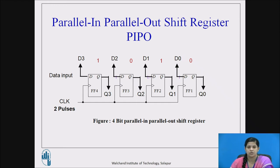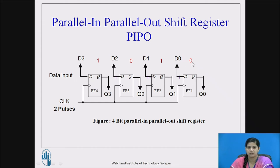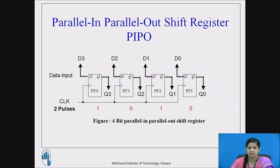Next is parallel in parallel out shift register, that is PIPO. The 4-bit parallel in parallel out shift register has a structure of four D flip flops but with individual inputs and outputs. The clock is common so the circuit is synchronous, but data must be given simultaneously in parallel. Considering data input 1, 0, 1, 0 — we give this data parallelly through inputs D0, D1, D2, and D3 in a single clock pulse, and at the next clock pulse we can read all the data 1, 0, 1, 0 from the system simultaneously. So totally 2 clock pulses are required for the parallel in parallel out shift register.